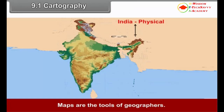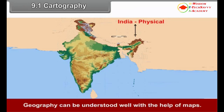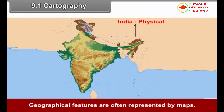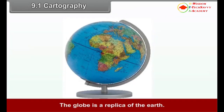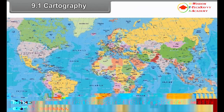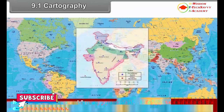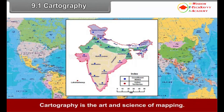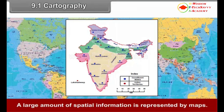9.1 Cartography. Maps are the tools of geographers. Geography can be understood well with the help of maps. Geographical features are often represented by maps. The globe is a replica of the Earth, but it cannot be used to show detailed information. Hence, maps are used for representation of a part or whole of the Earth's surface. Cartography is the art and science of mapping, and a large amount of spatial information is represented by maps.